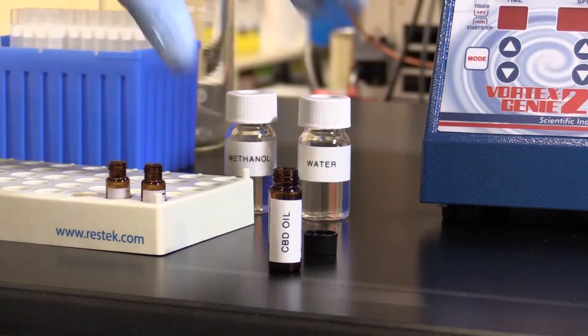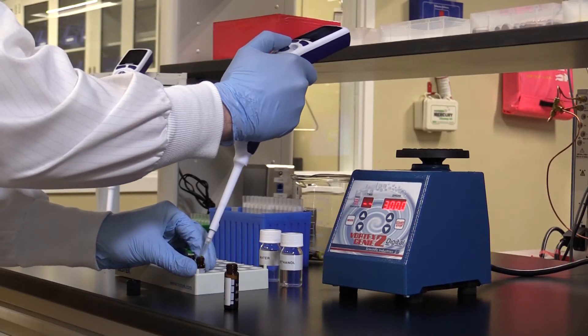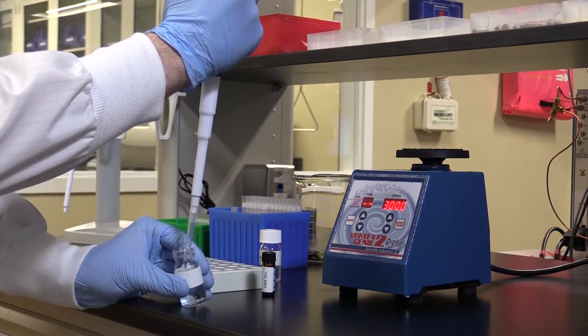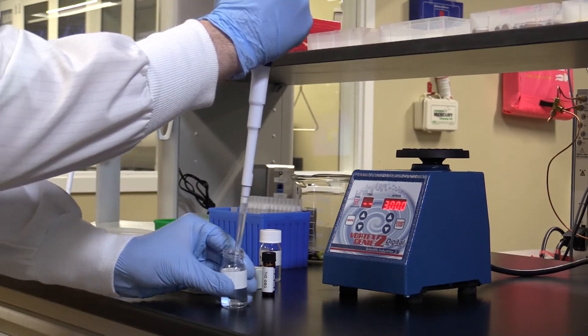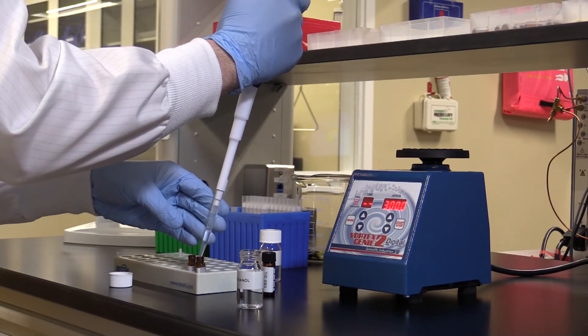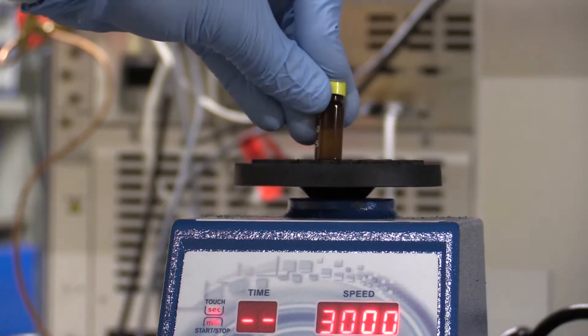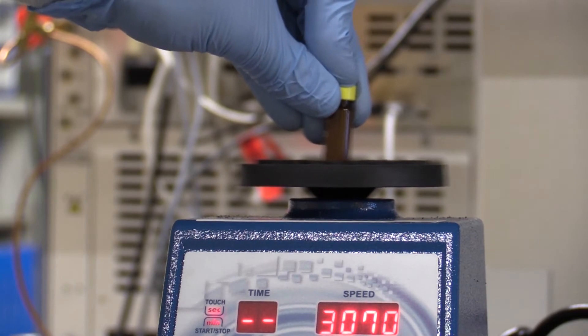Our first step is to pipette 50 microliters of CBD oil and then extract the sample with 950 microliters of methanol, followed by vortexing for 30 seconds at 3000 rpm.